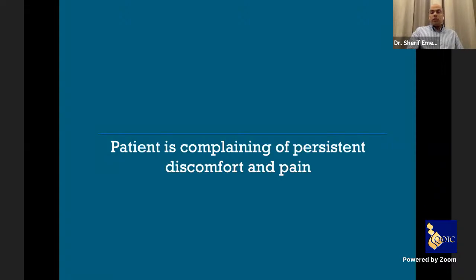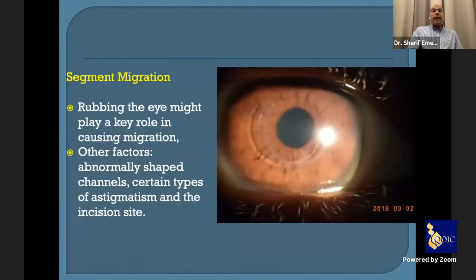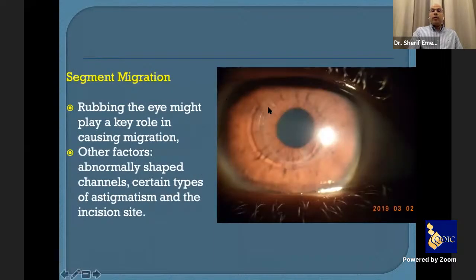The Intacs were at a good depth — not superficial. I decided to remove them. The literature states that sometimes the intracorneal ring can touch one of the corneal nerves, causing resistant discomfort due to direct contact — this is one of the rare complications of intracorneal ring segments. Segment migration is another complication, treatable with suturing, and can happen if the ring is very close to the incision site.